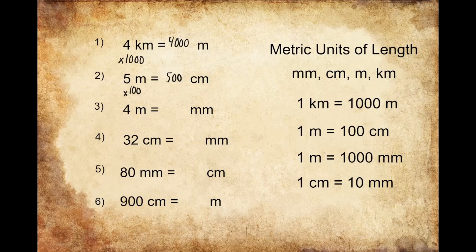Looking at question number three, we're being asked to convert four meters into millimeters. One meter is equal to 1,000 millimeters. So if I have four meters, I'm going to have four groups of 1,000. We're going to multiply the value of our meters by 1,000 in order to convert into millimeters. Four times 1,000 gives us 4,000, so four meters converts into 4,000 millimeters.